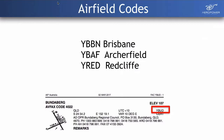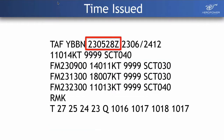For example, Archerfield again starts with Y because it's in Australia, AB because it's attached to the Brisbane control zone, and AF for Archerfield. Redcliffe, where we are today, is YRED. You can find these airfield codes in the Enroute Supplement. Using Bundaberg as an example, the airfield code is YBUD. So each airfield has a four-letter designator code that appears as the second item in the TAF to tell you which airfield it relates to.